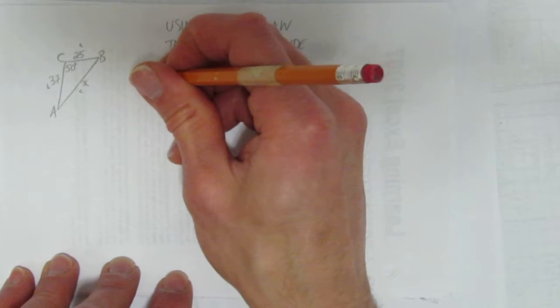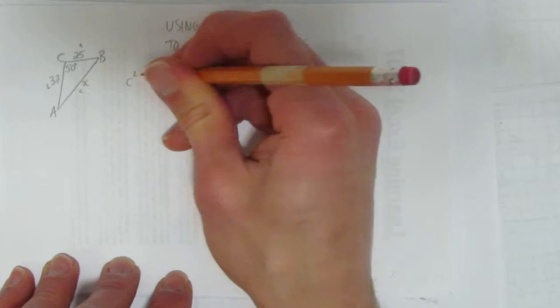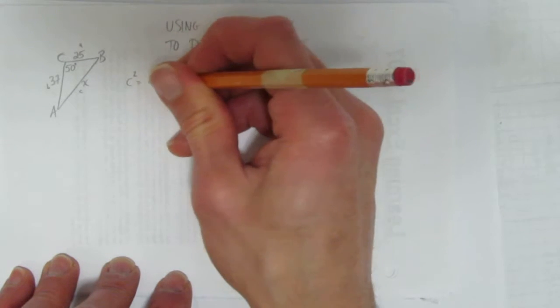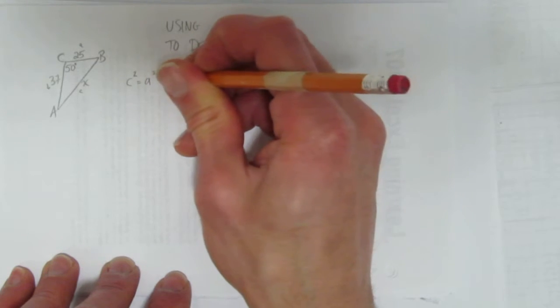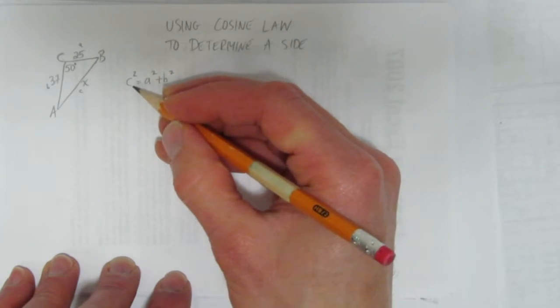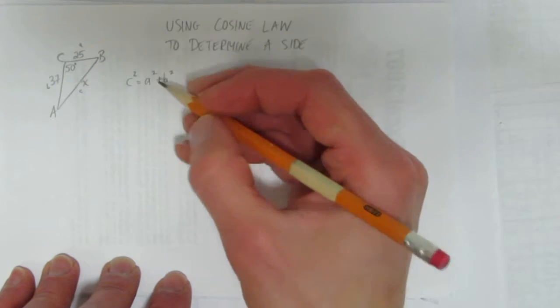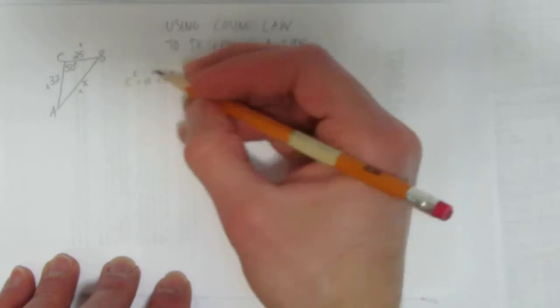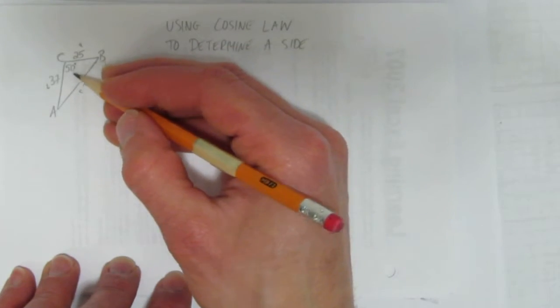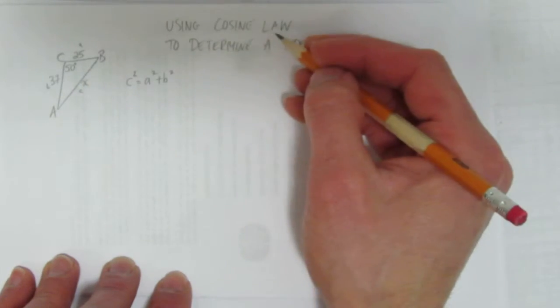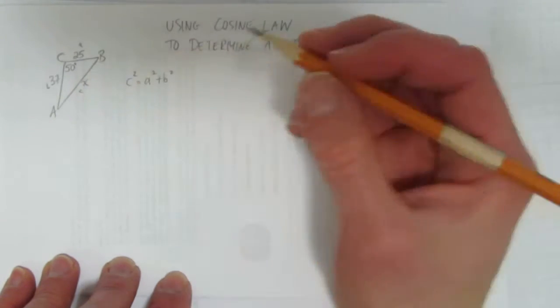Cosine law - you're usually given the formula on a test, but I'll write it out here. Cosine law is c² = a² + b². Look, it looks just like Pythagorean theorem: c² = a² + b². But the difference is, cosine law takes into account this angle is not 90 degrees. You use cosine law when it's not a right angle triangle.